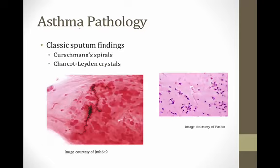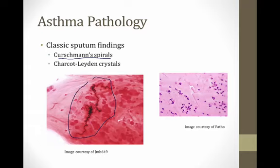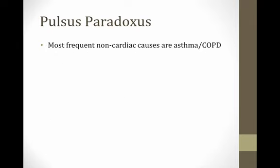There are two classic asthma pathology findings to be aware of, sometimes seen in sputum or discovered at autopsy from patients who die of status asthmaticus. The first is called a Curschmann spiral — patients with asthma often develop mucus plugs, and inside those plugs you can find these whorls formed by shed epithelial cells. You also often find eosinophils, and sometimes crystal structures called Charcot-Leyden crystals, which are made up of eosinophil membrane proteins. Additionally, pulsus paradoxus — a drop in systolic blood pressure with inspiration — is usually caused by pericardial effusion and tamponade, but asthma and COPD are rare non-cardiac causes.